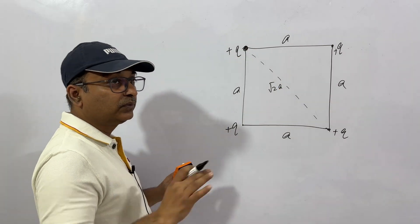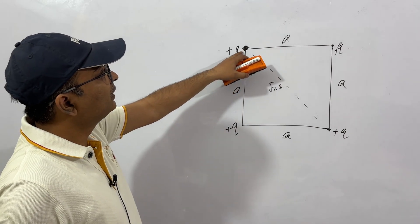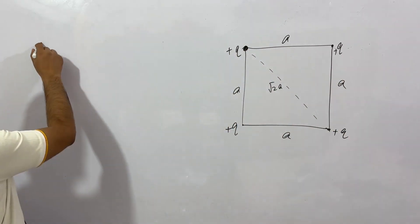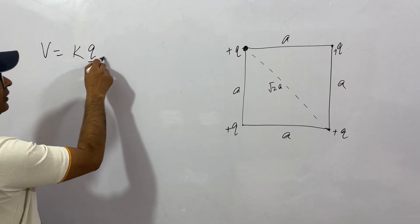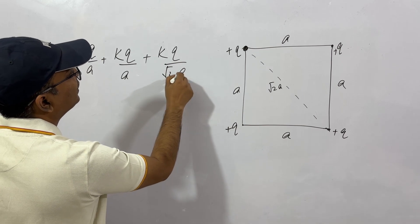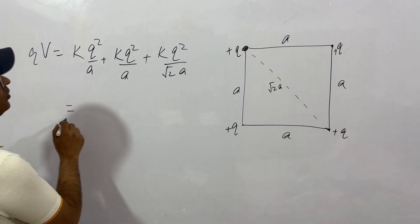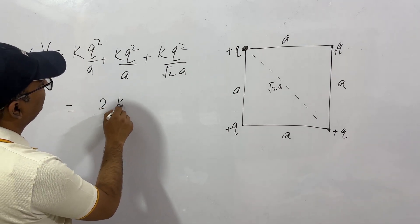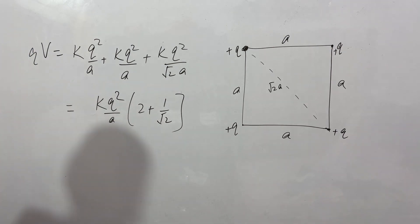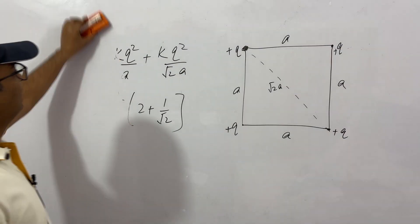Now, if asked for the potential energy of one particular charge due to the other three — not the whole system — we find the potential at that corner due to the other three charges: k q by a, plus k q by a, plus k q by root(2a). Then multiply by q to get potential energy. Taking k q squared by a common, this gives k q squared by a times (2 plus 1 by root 2). This is the potential energy experienced by that one charge.